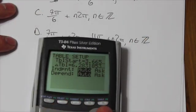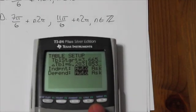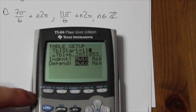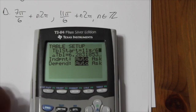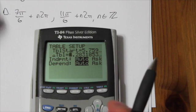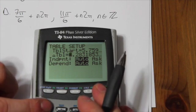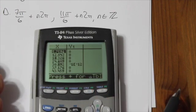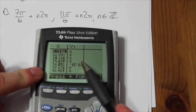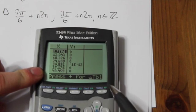So I have to go back into my table set menu, and this time I have to change what I'm starting with. I'm going to change that to 11 pi divide by 6. It's still going up by 2 pi, so I can leave that. And now I go back to my graph there.